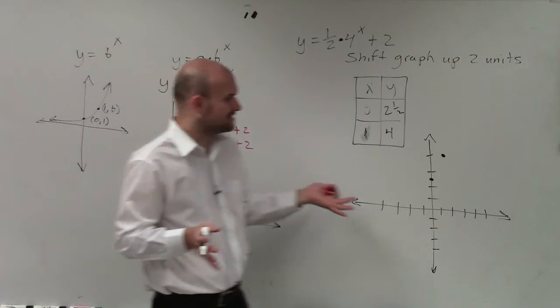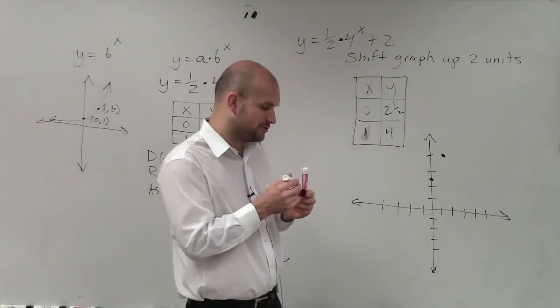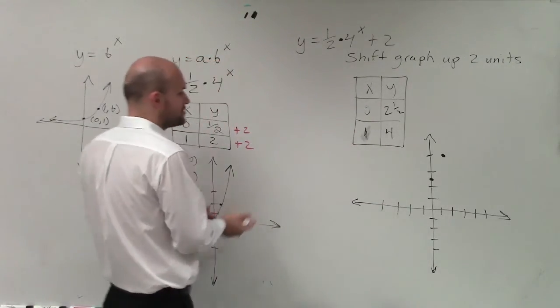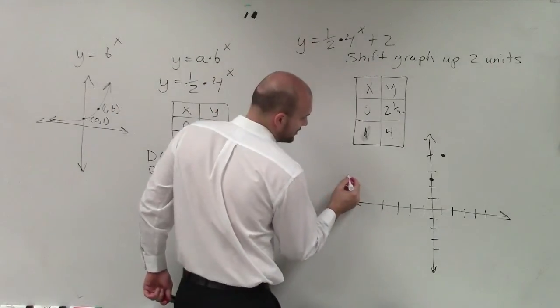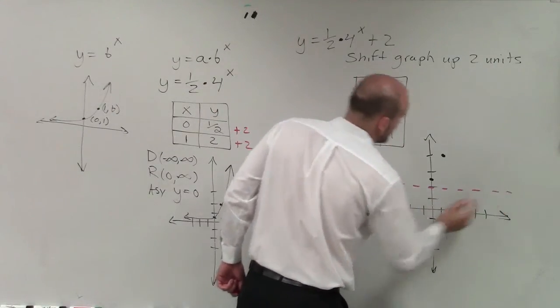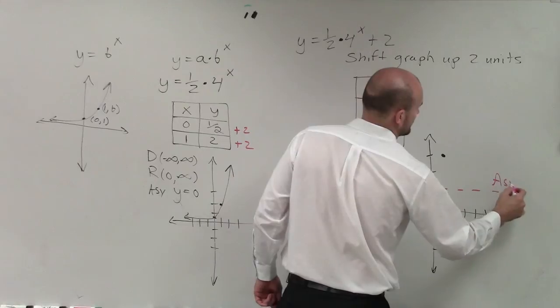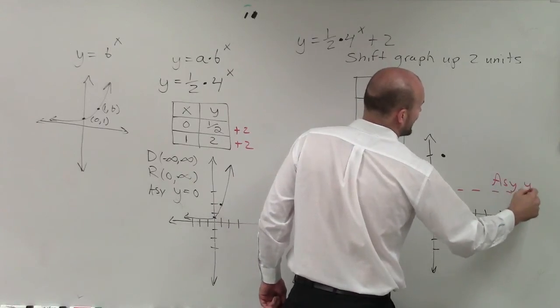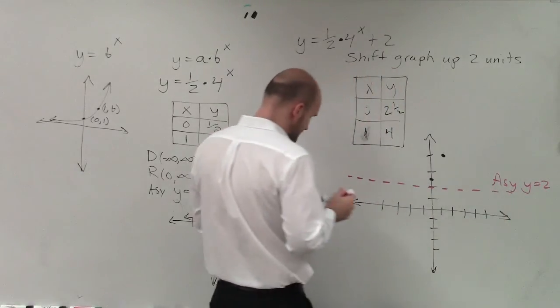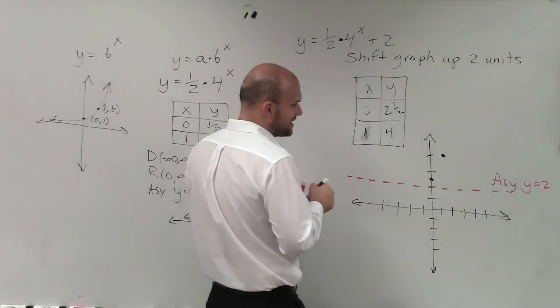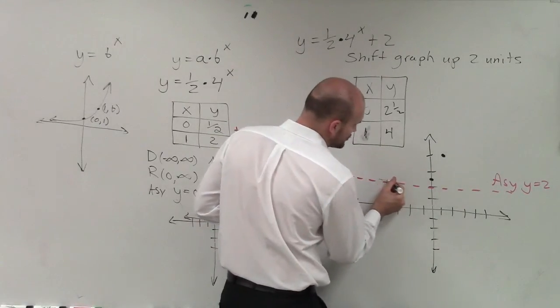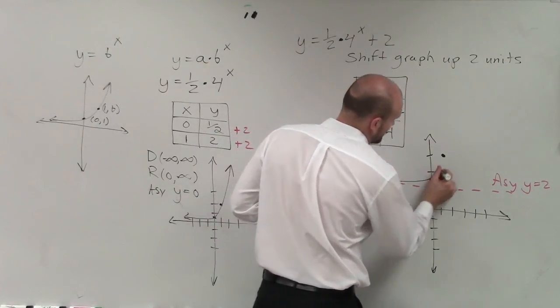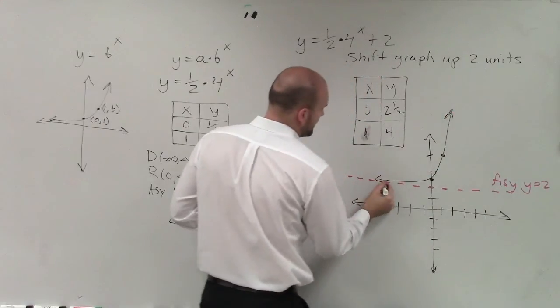But now, if I've taken this graph and I've shifted my graph up 2 units, I now have my asymptote has been shifted up 2 units as well. So now, I have an asymptote at y equals 2. So that's going to affect what my graph is going to look like, because my graph is now going to approach 2, and then be shot back up.